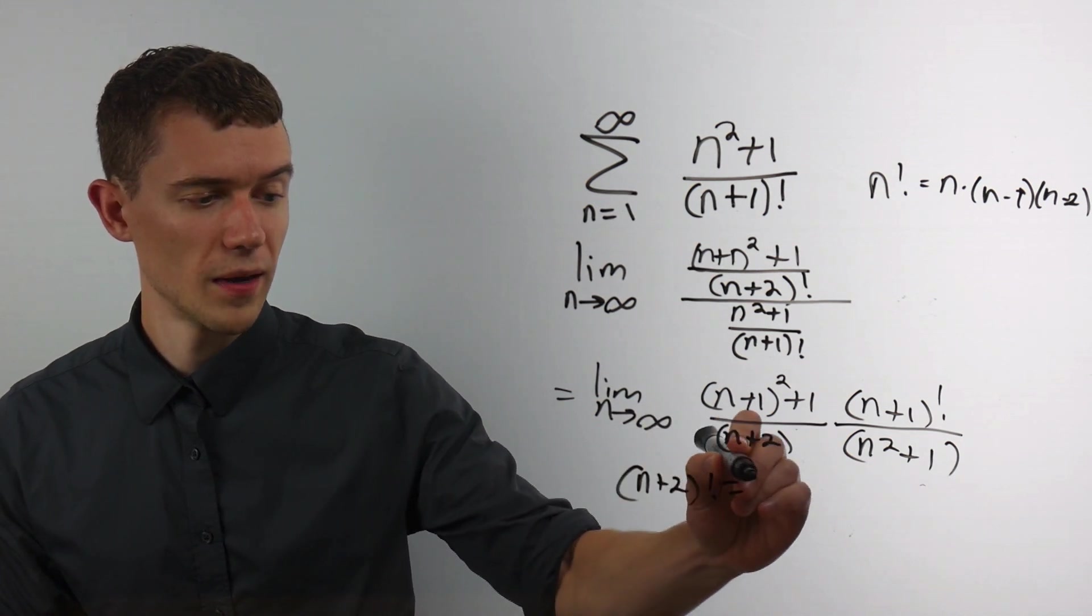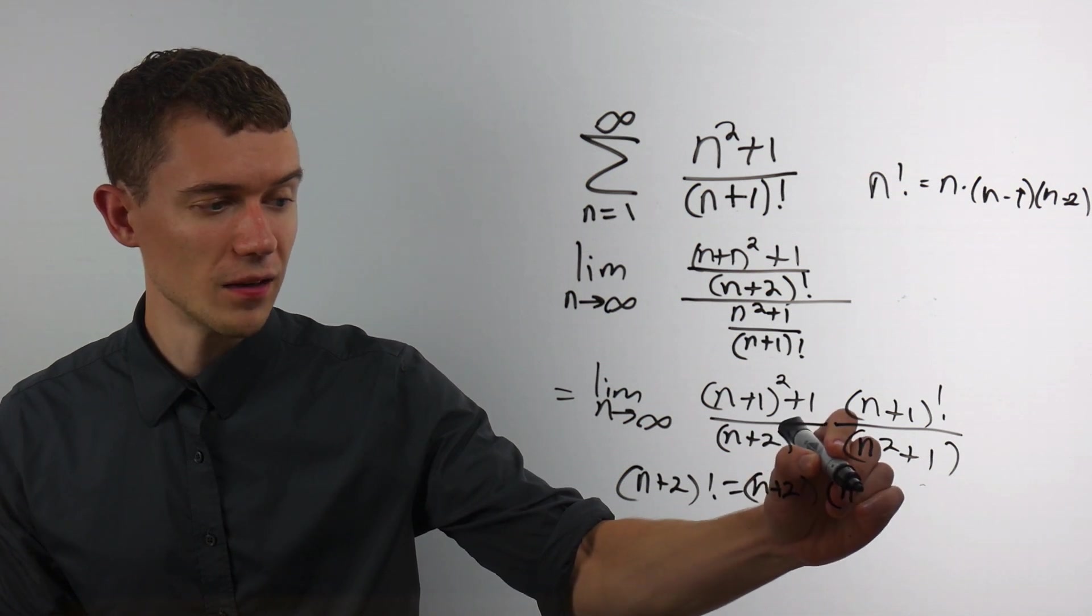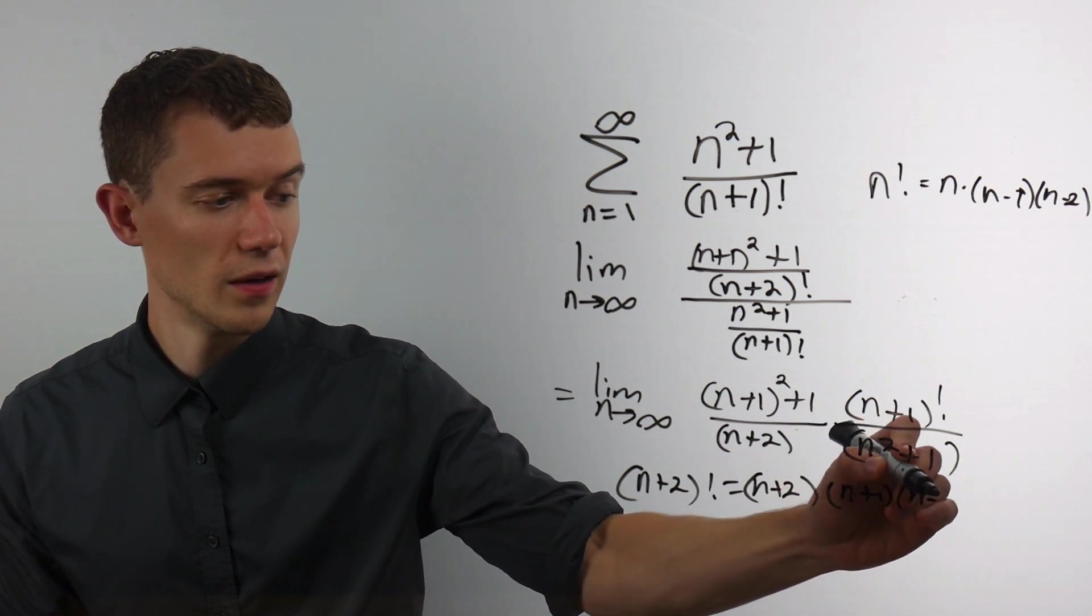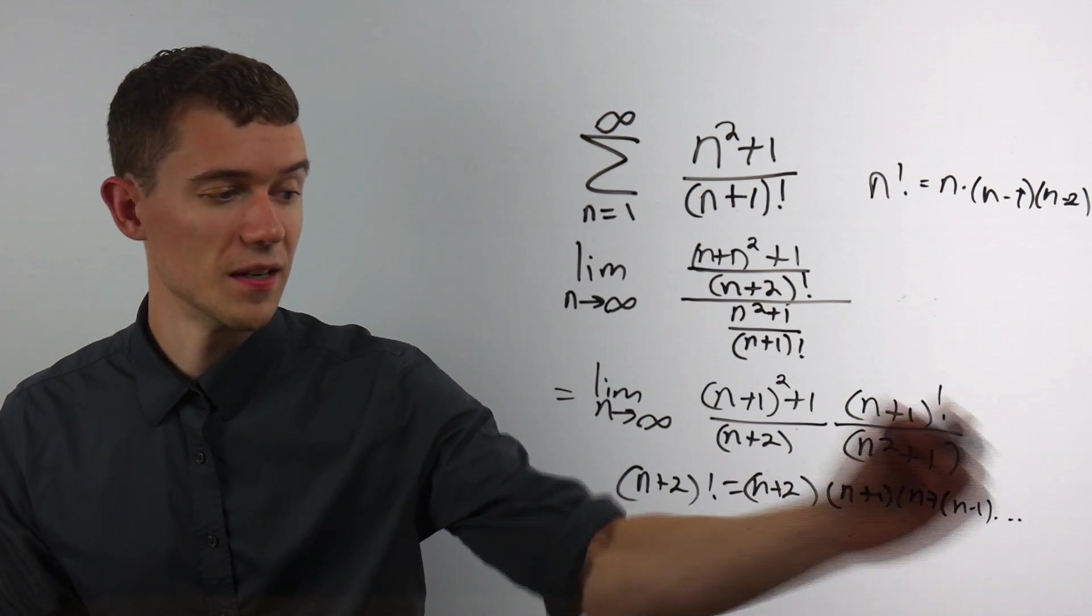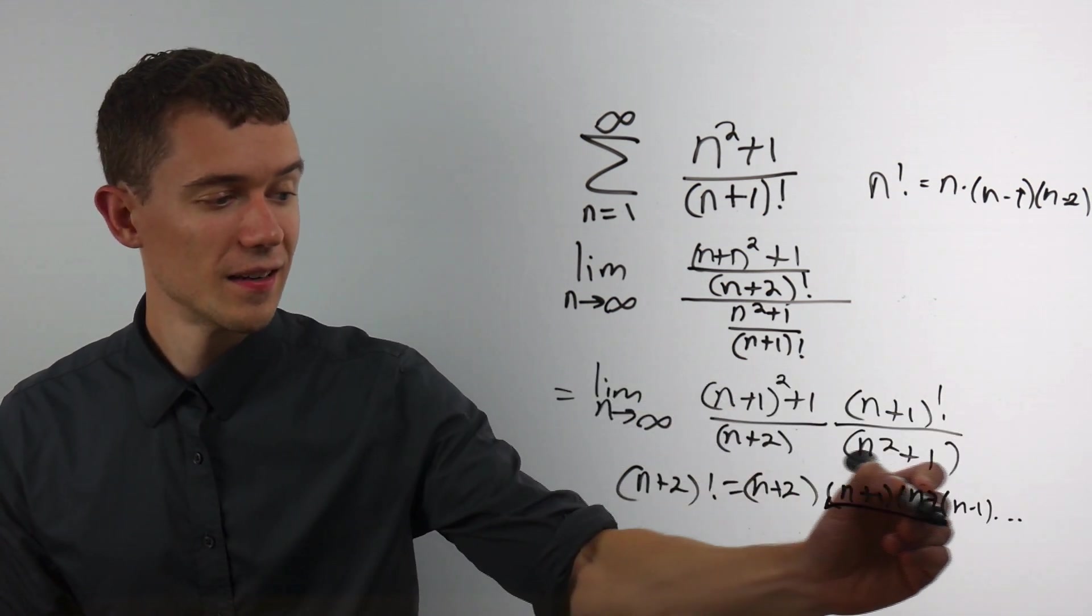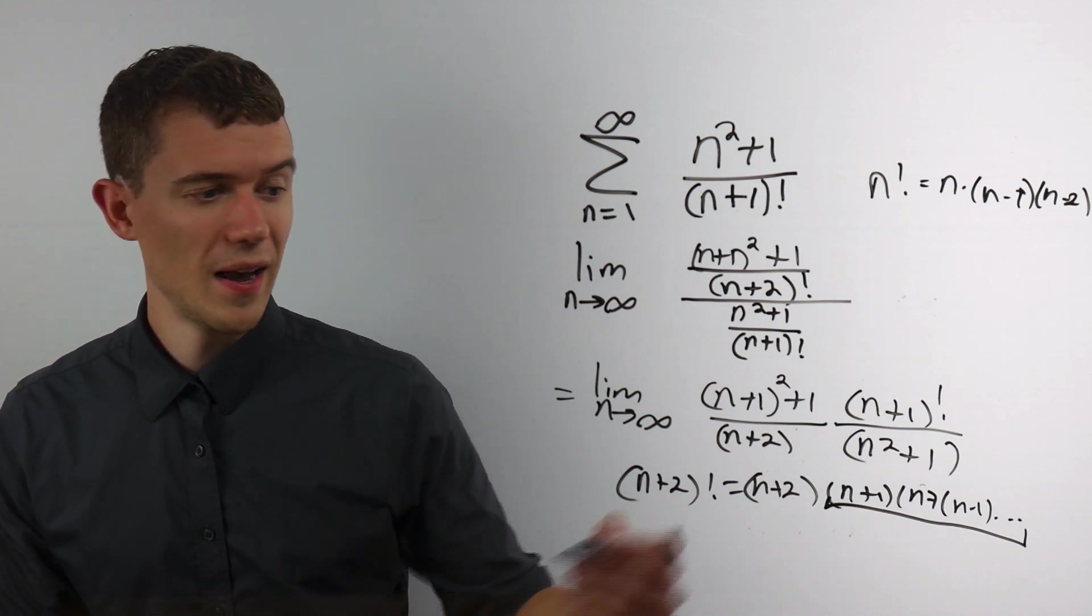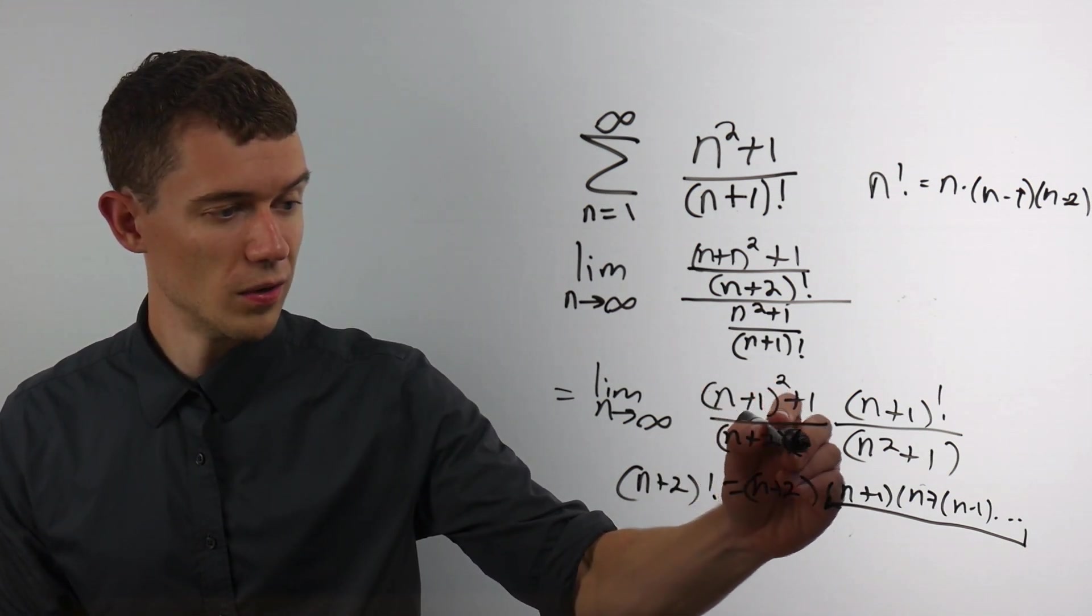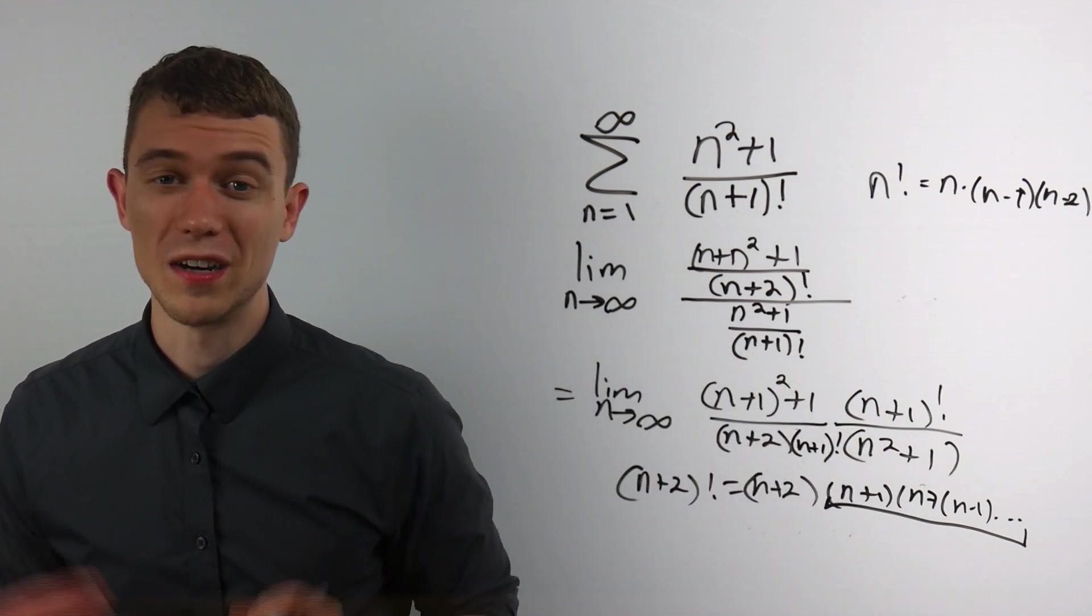You see, n plus 2 factorial, as I was saying, is n plus 2. And then if I kept counting n plus 1, n, n minus 1 forever, as big as n goes, this, that would be n plus 1 factorial. And so n plus 2 is simply multiplied by an n plus 1 factorial.